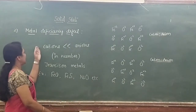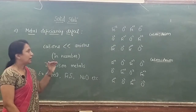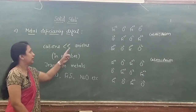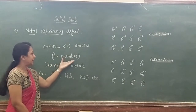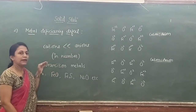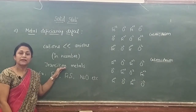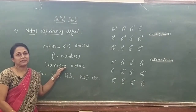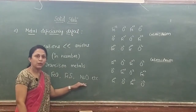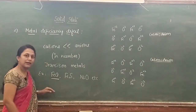The next type is metal deficiency defect. In this defect, cations or metals are less in number compared to anions. This defect is shown by transition metals because they exhibit variable oxidation states. Examples include iron oxide (FeO), FeS, and nickel oxide (NiO).